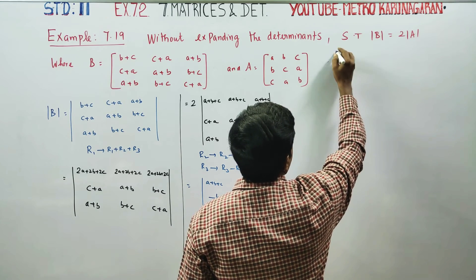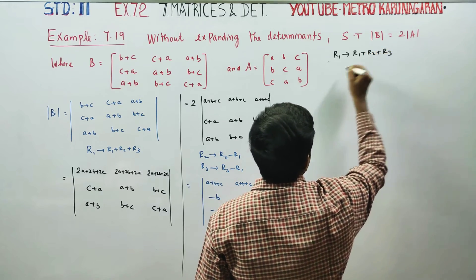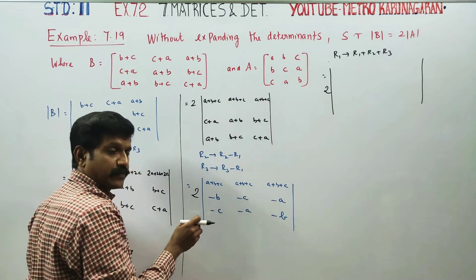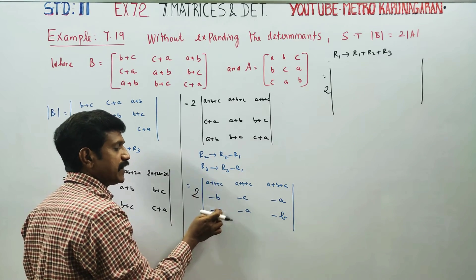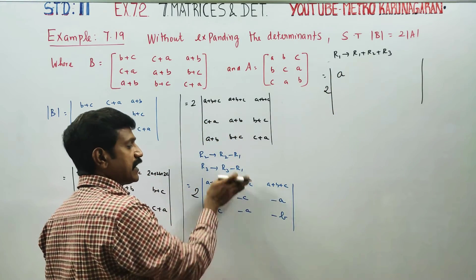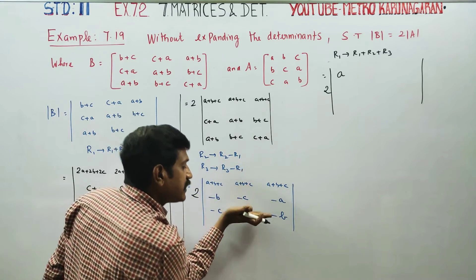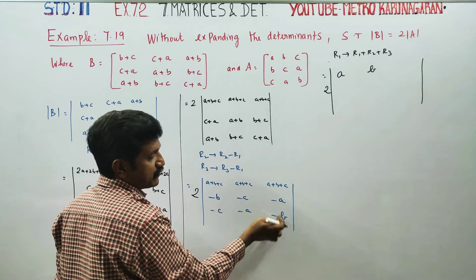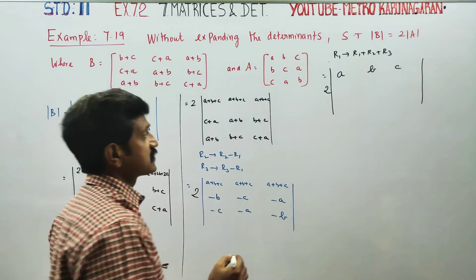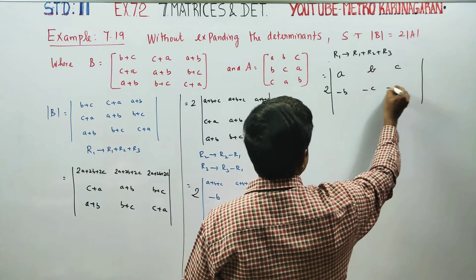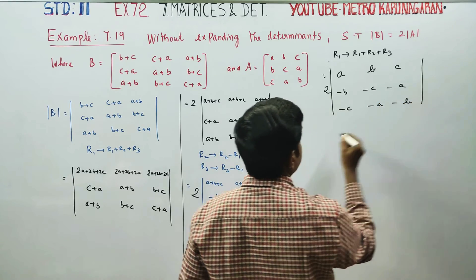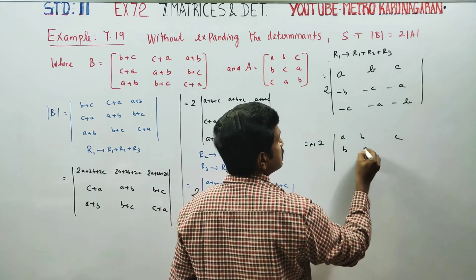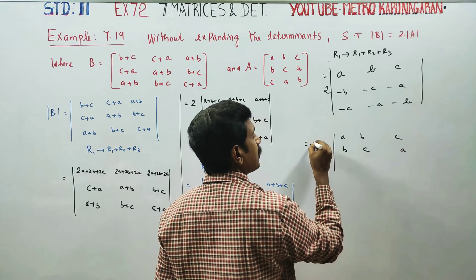Looking at R1 after applying R1 = R1+R2+R3 again: adding these values — minus B and this cancel, minus C and this cancel, only A remains; similarly B remains; then minus C, minus C cancel, A cancels, only B balance remains; minus A, C remains. The resulting determinant has entries: minus B, minus C, minus A; minus C, minus A, minus B. Taking minus common from each row gives 2 times, with entries A, B, C; B, C, A; C, A, B.